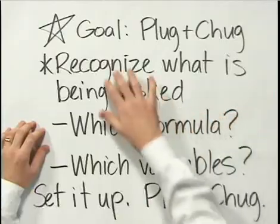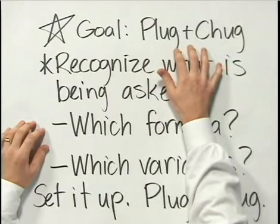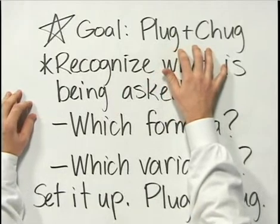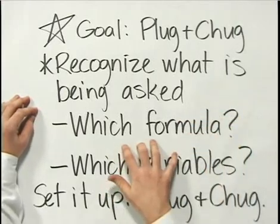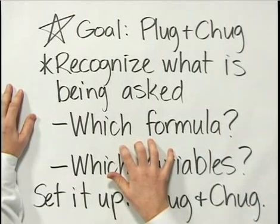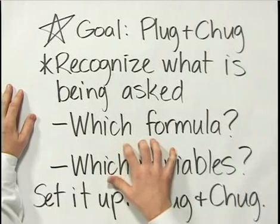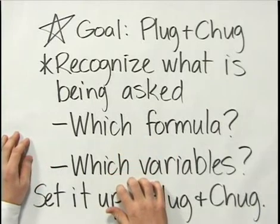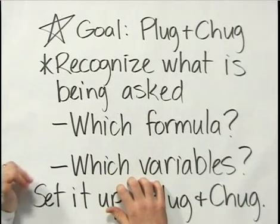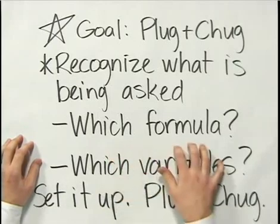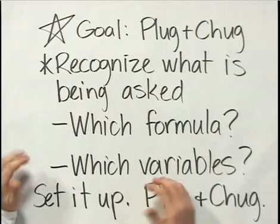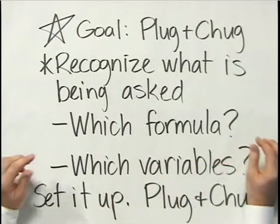The goal in applying these rules is to get to the point that I call a plug and chug problem. Our goal is to turn every problem you encounter from a confusing word problem into a straight plug and chug problem. That means first you recognize what is being asked of you — which formula does the question refer to, which formula am I going to need to apply? Sometimes it might be several formulas. The second thing is: which variables in that formula am I being asked to calculate or solve for? The first step is always to recognize what is being asked, and that means knowing those formulas and knowing the variables in the formula. You can see how important it is to come into the exam knowing the formulas very, very well.